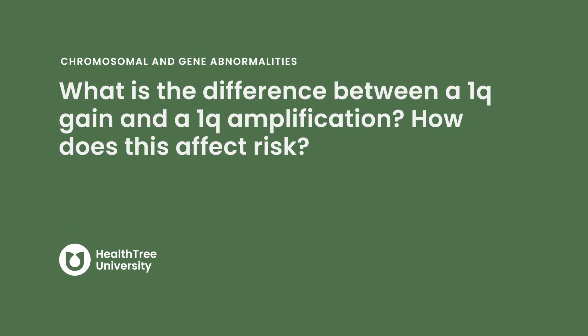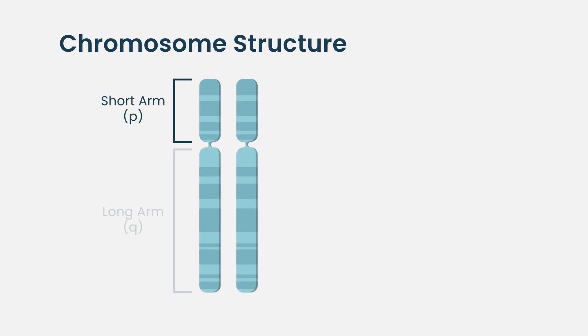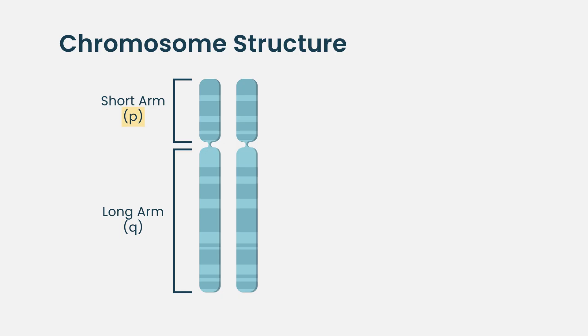What is the difference between a 1Q gain and a 1Q amplification, and how does this affect risk? One of the mutations often seen in multiple myeloma is 1Q gain — a mutation in chromosome 1, specifically in the Q portion. The chromosome is almost like an X with short arms and long arms; the short arm is called P and the long arm is called Q. When you hear 1Q gain, it means that the cancer cell has an extra copy of that part of chromosome 1Q.